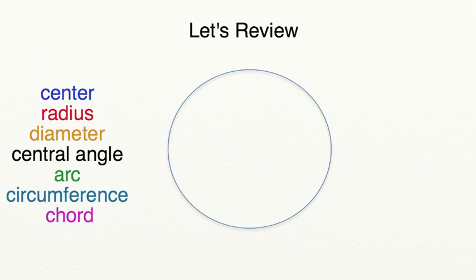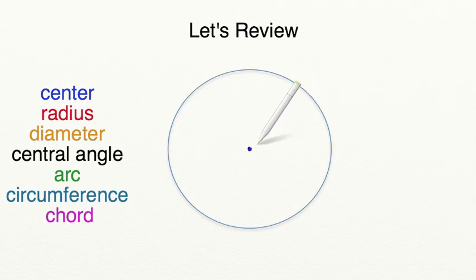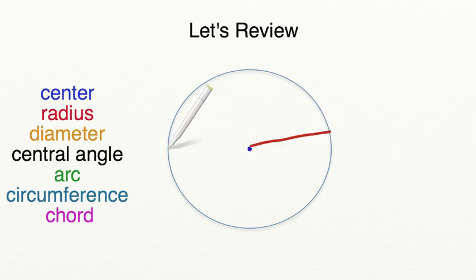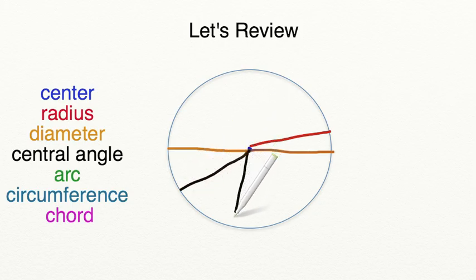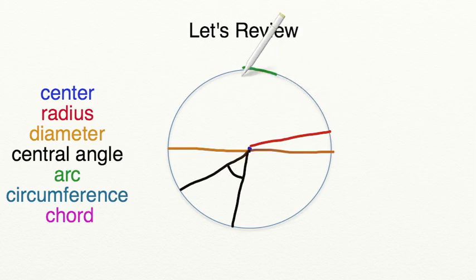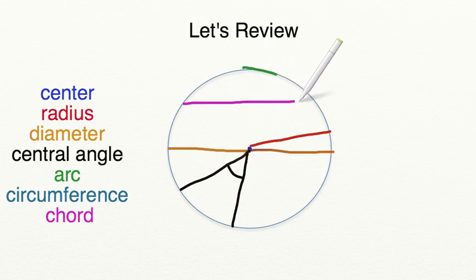Let's review what you've learned in today's lesson. The center of the circle is the middle of the circle. The radius goes from the center of the circle to the edge. The diameter is the distance from one edge of the circle to another, crossing through the center point. A central angle is created from the center of the circle to the edge, forming an angle. The arc is a distance around the edge of the circle. The circumference is the entire distance around the full edge of the circle. And lastly, the chord is the distance from one edge of the circle to another point on the circle, but does not have to cross through the center.